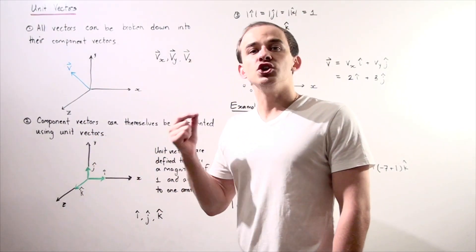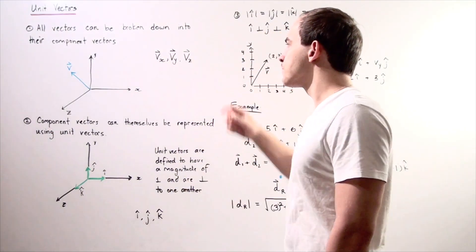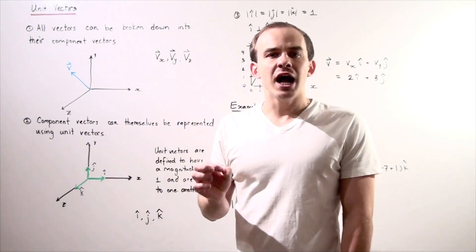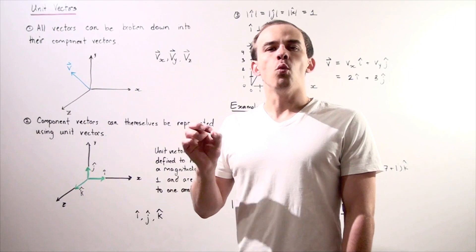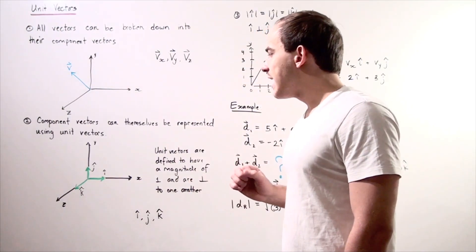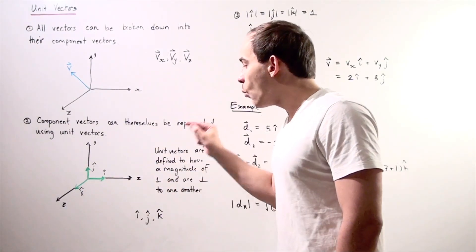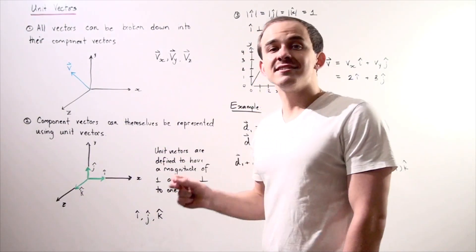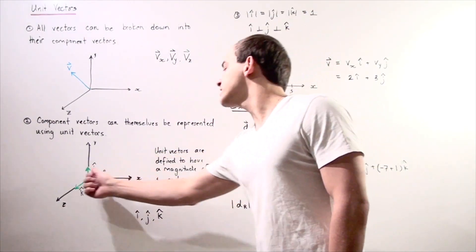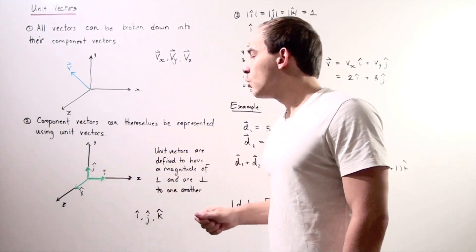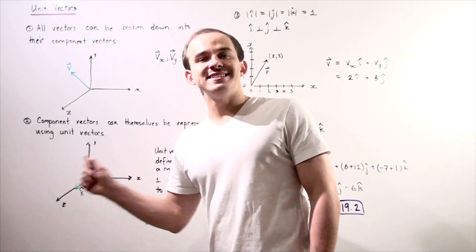We can use something known as unit vectors to represent these component vectors. Unit vectors are defined to have a magnitude of one and are perpendicular to one another. In our three-dimensional plane with x, y, z axes, each axis has its own unit vector: the i-hat unit vector, which points along the x-axis, the j-hat, which points along the y-axis, and the k-hat, which points along the z-axis.